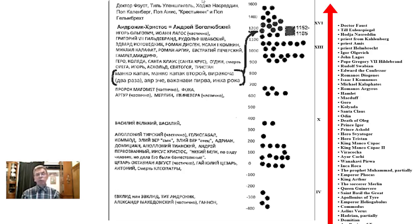Let's quickly go through this list of duplicates — phantom reflections of Andrei Bogolubsky and Andronikos Christ. Many literary characters: Dr. Faust, Till Eulenspiegel, Hodja Nasradin, Priest from Kallenberg, Priest Amos, Priest Helmbrecht. In Russian history: Igor Olgovich, John Lagos. Pope Gregory VII Hildebrand, Rudolf Swabian, Edward the Confessor, Romanos Diogenes, Isaac I Komnenos, Michael Caliphates, Romanos Argyros. Literary figures Hamlet, Macduff, Jero, Koljata, Santa Claus, Odin. From Russian chronicles: Death of Oleg, Prince Igor, Prince Askold, Hero Svitigor, Hero Tristan.